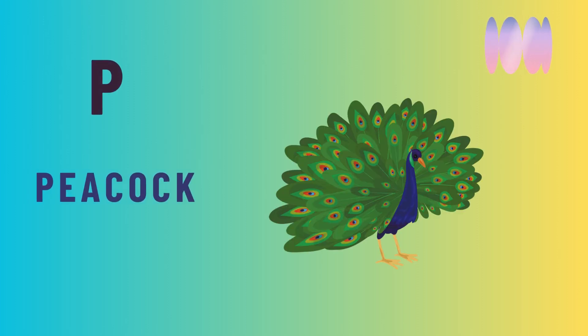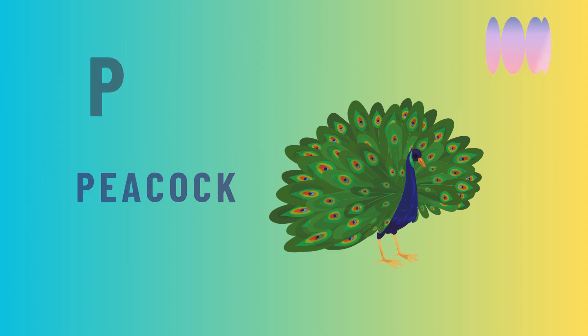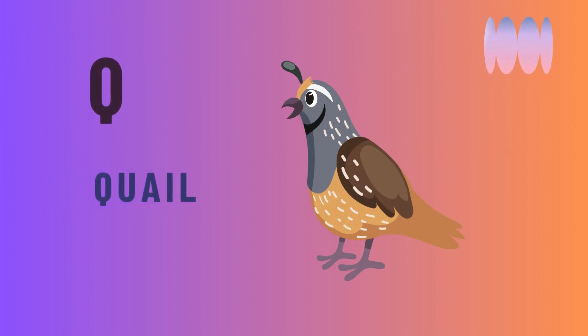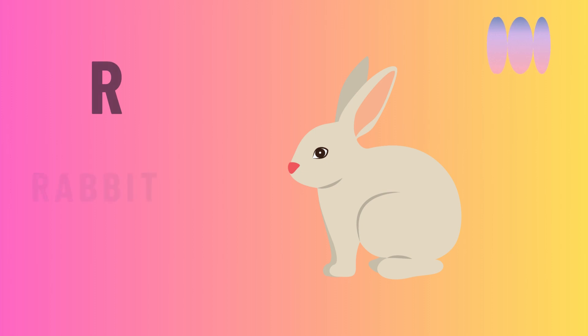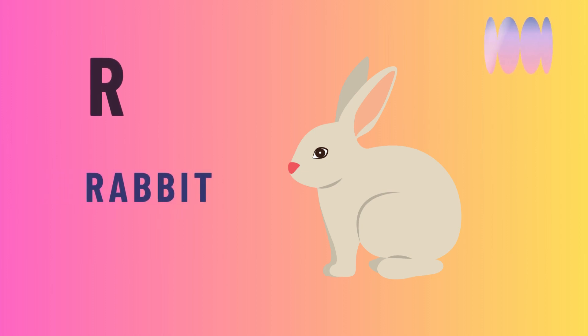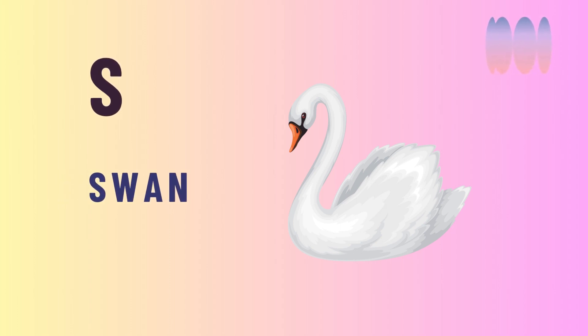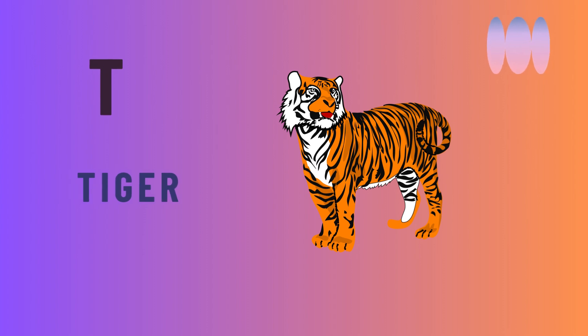P — Peacock. Q — Quail. R — Rabbit. S — Swan. T — Tiger.